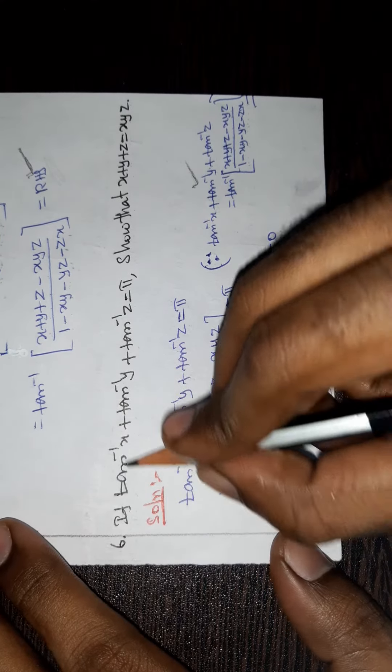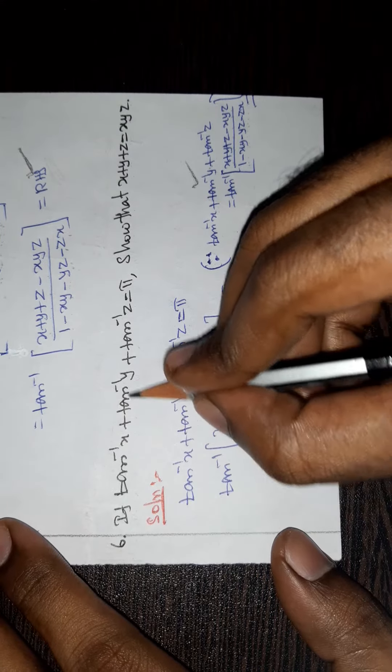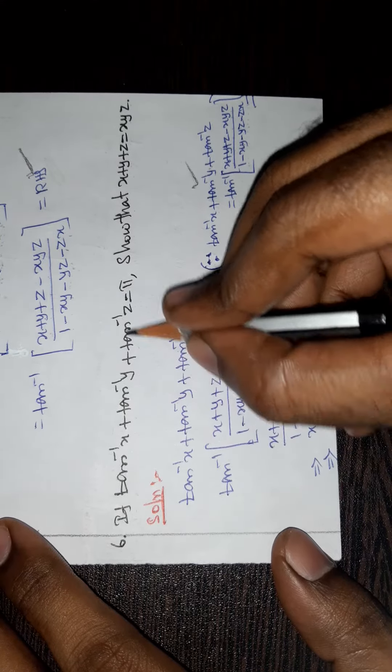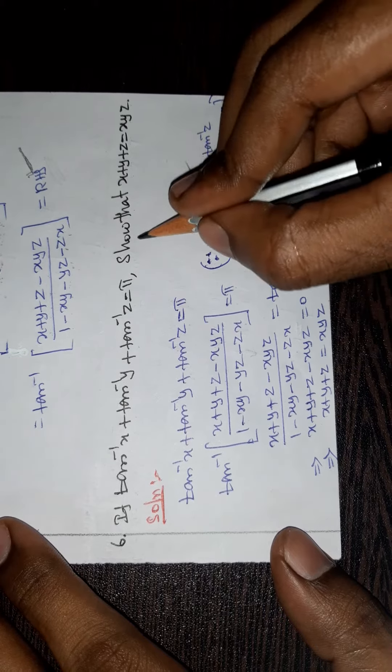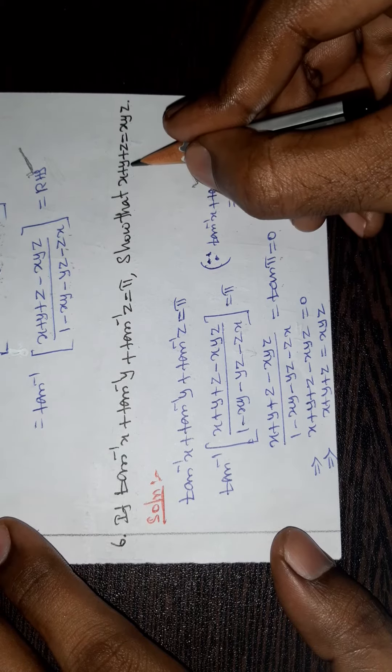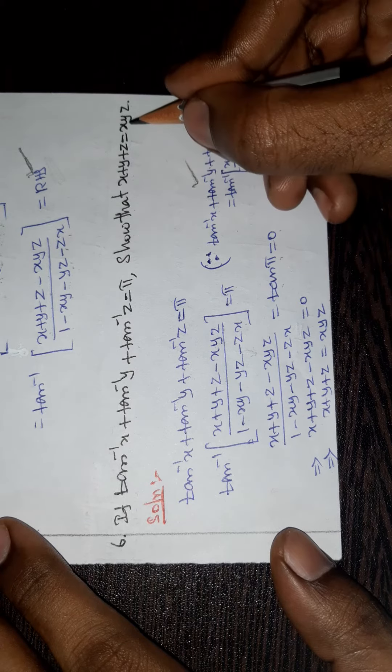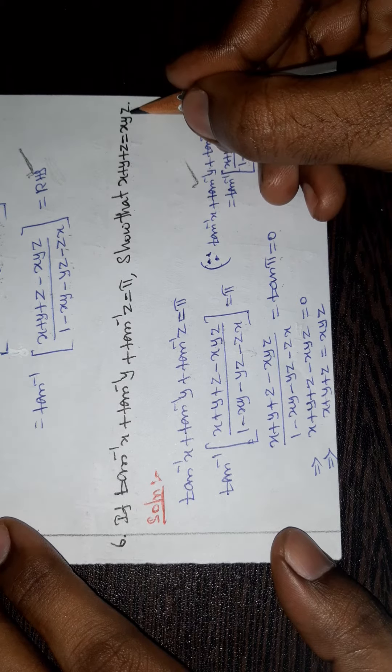Question number 6: if tan inverse x plus tan inverse y plus tan inverse z equals pi, show that x plus y plus z equals xyz.